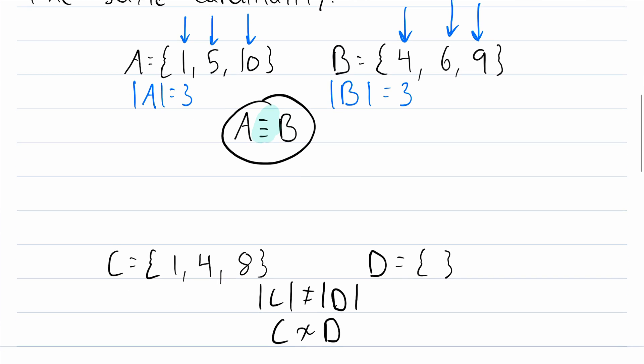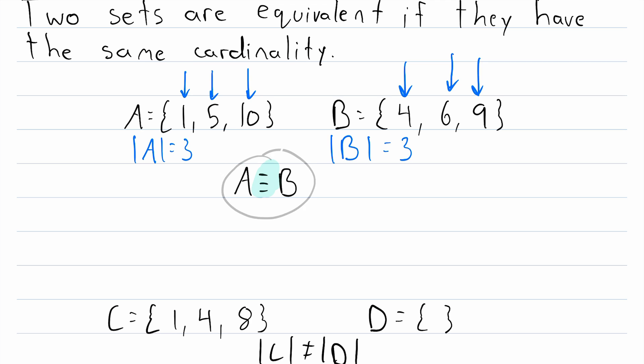And it follows directly from this particular definition of equivalent sets that if two sets are equal, then they are equivalent. And that should seem pretty intuitive. If two sets are equal, then obviously they have to have the same number of elements, so they would be equivalent. However, the converse is not true. Equivalent sets are not necessarily equal. We see that up here with our first example. A and B are equivalent because they have the same cardinality, but they are not equal because they do not contain the same exact elements.